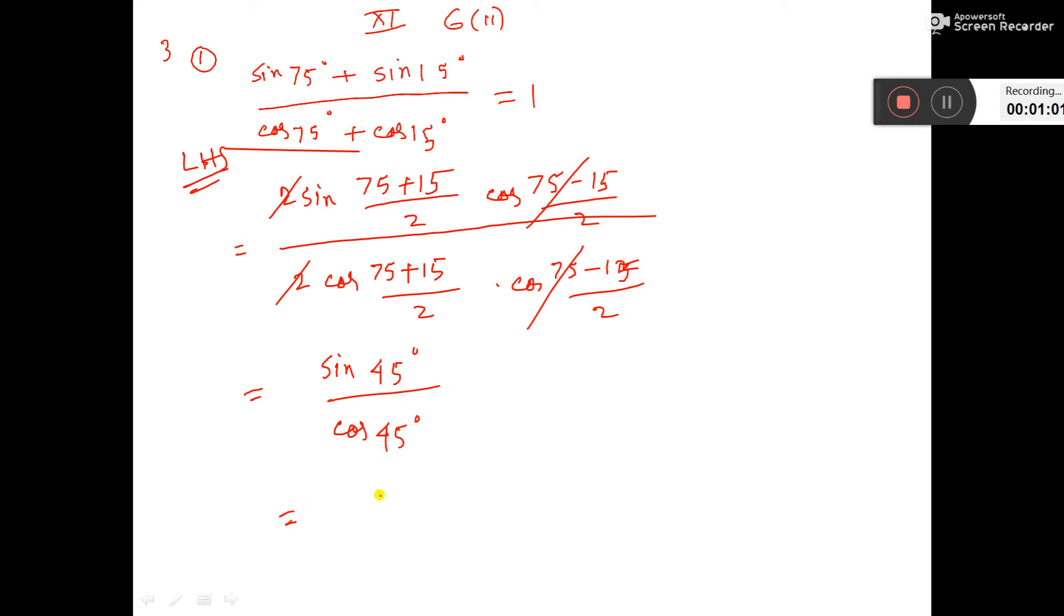Now put the value. Sin 45 is 1 by root 2, cos 45 also 1 by root 2. So cut this, this equals 1, that is equal to right hand side. It is proved.